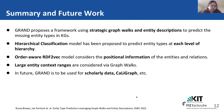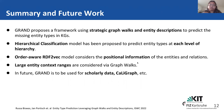To summarize, the proposed model GRAND uses strategic graph walks and entity descriptions to predict missing entity types. A hierarchical classification has also been proposed to predict entity types at each level. The order-aware RDF2Vec, which uses the structured RDF2Vec model, considers the position information of entities and relations, resulting in better entity representation. The large context ranges considered in the graph walks — because we go for multiple hops — give a lot of contextual information to predict the missing types. In future, GRAND is to be used for scholarly data as well as Caligraph.